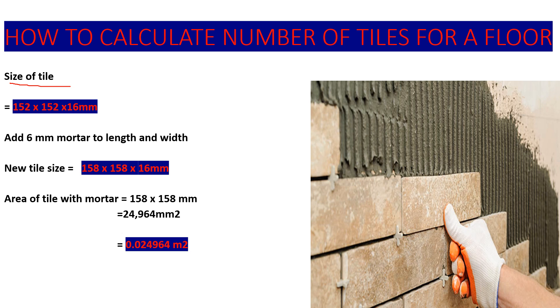Now, onto this tile we are going to add mortar. We add mortar here and also here. In this case, we are taking a 6 millimeter mortar. So we find our new tile size which has mortar: 152 plus 6 is 158 by 158 by 16 millimeters. Take note, we are only adding mortar to the length and the width—we are not adding it to the thickness.